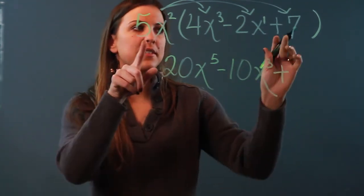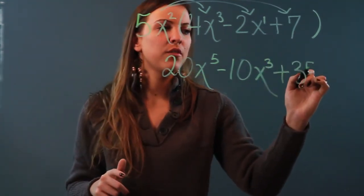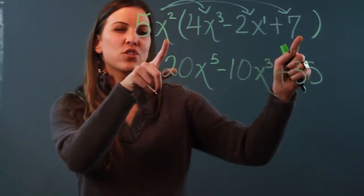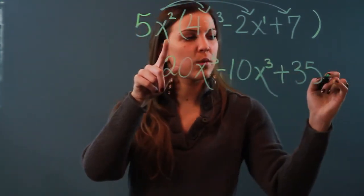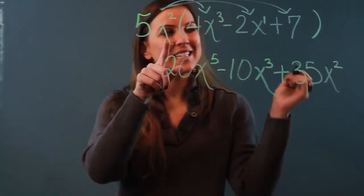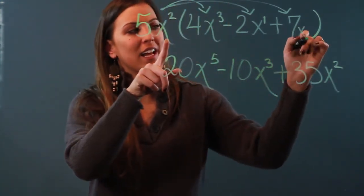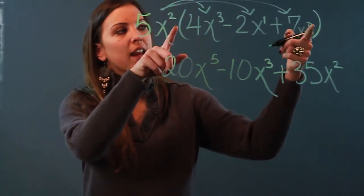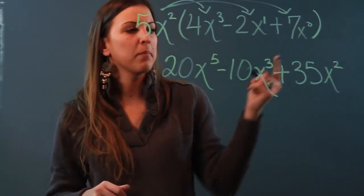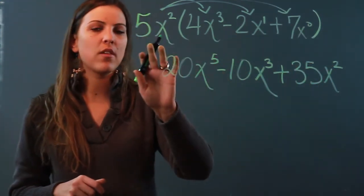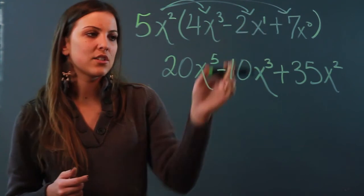Plus 5 times 7 is 35. I have x squared and there's no x over here. So I have to bring that x squared on over with me because I can technically look at this and say that's really x to the zero power. So if I add, I get 2 plus 0 is 2. So that's how you distribute this monomial to this trinomial.